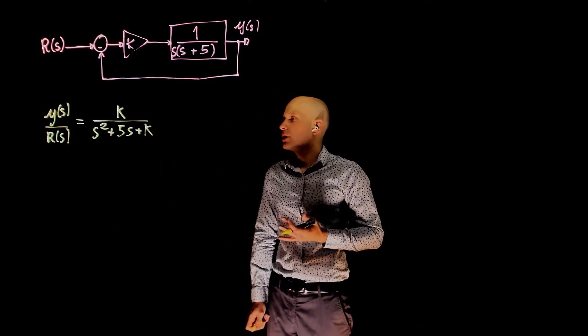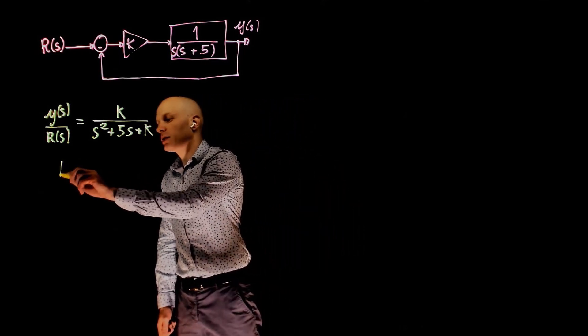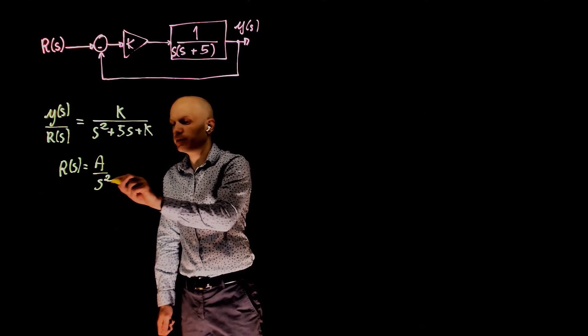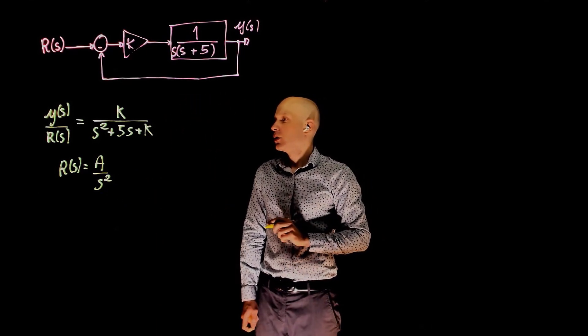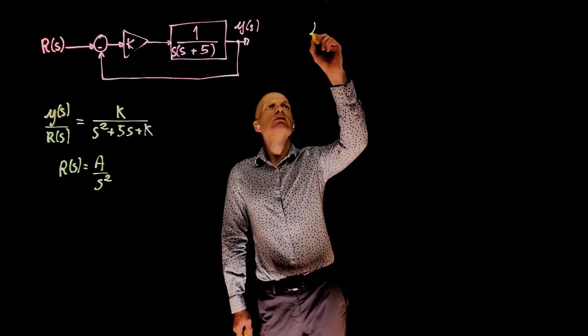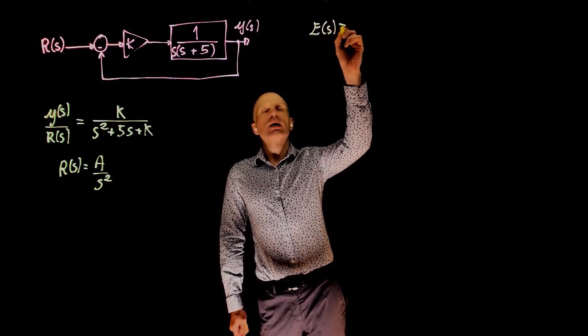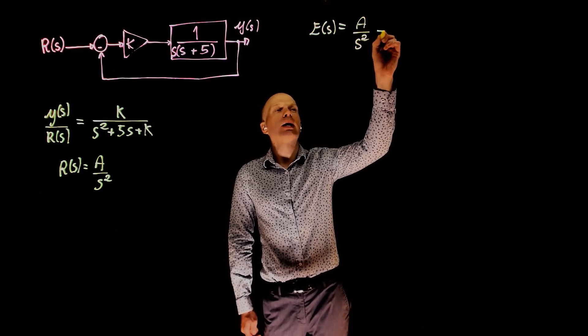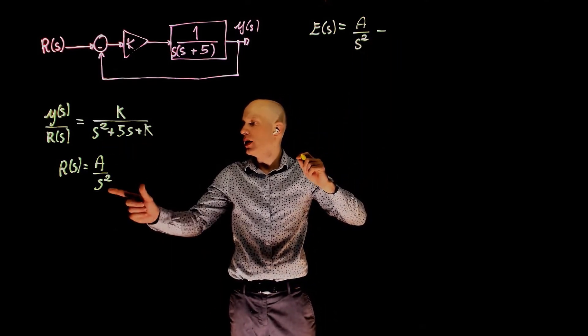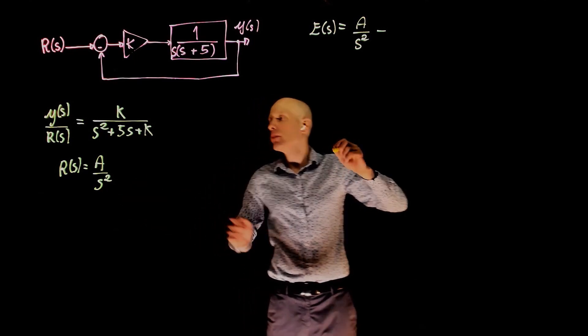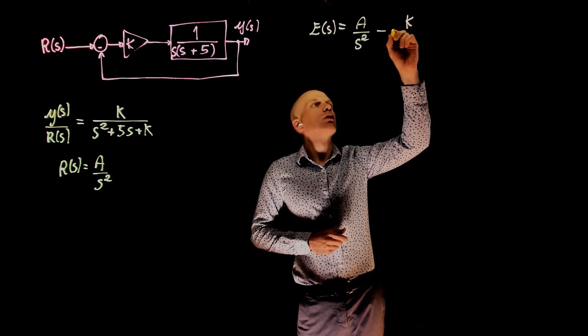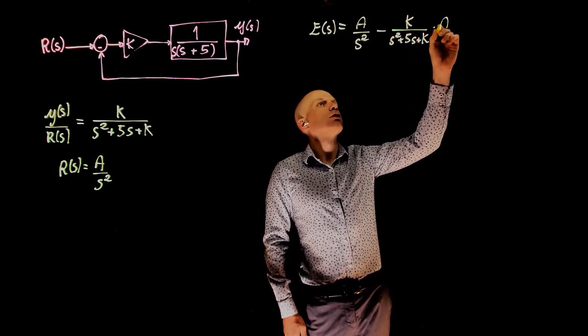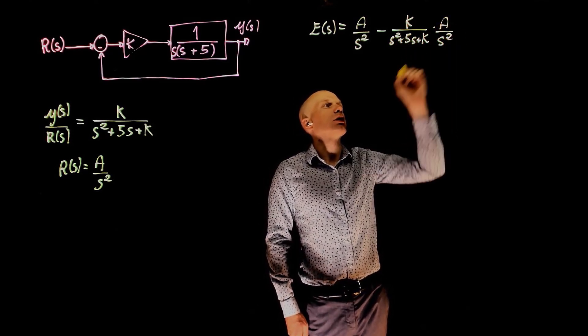We are interested in the steady state error when R of S is a ramp input of magnitude A, that is A over S squared. We can now define the error function as the input A over S squared minus the output, which is this expression here, times the input A. So minus k over S squared plus 5s plus k times A over S squared.